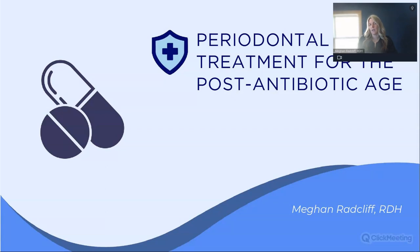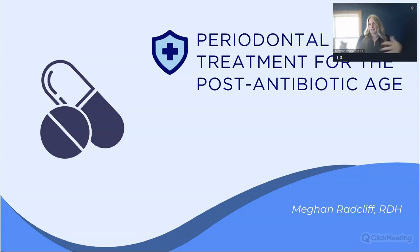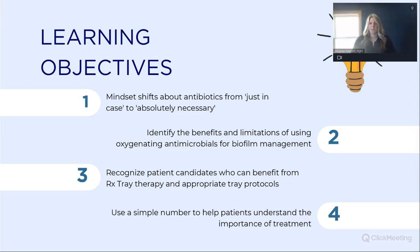We are truly in a post-antibiotic age, so we're looking for different ways that we can treat patients without the need of antibiotics. Today we're going to go through a little bit of everything. Now that we've heard about systemic diseases, how can we better treat our patients without antibiotics? Our learning objectives include a mindset shift from 'just in case' to 'absolutely necessary,' identifying benefits and limitations of antimicrobials for biofilm management, recognizing patient candidates for Periprotect trays, and using a simple number to help patients understand the importance of treatment.